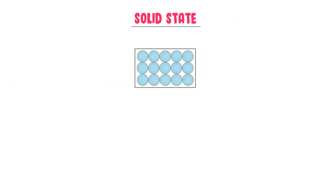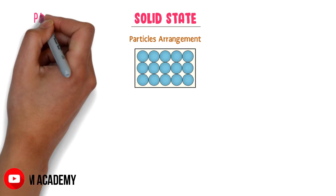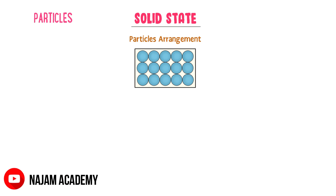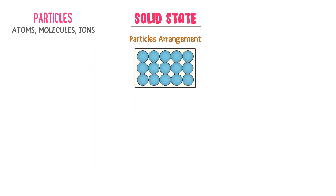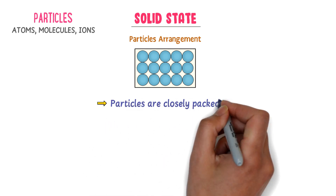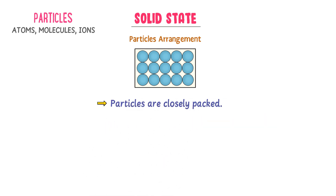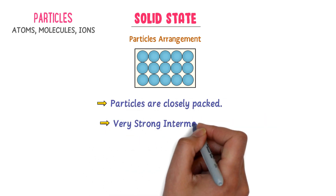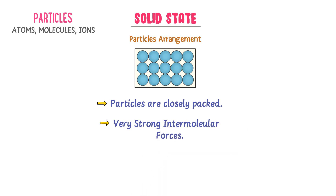At microscopic level, this is the arrangement of particles in a solid state. Note that by particles I mean atoms, molecules or ions. In solid state, particles are closely packed together. The intermolecular forces between particles are very strong, and it is only due to these intermolecular forces that particles in the solid state are closely packed together.